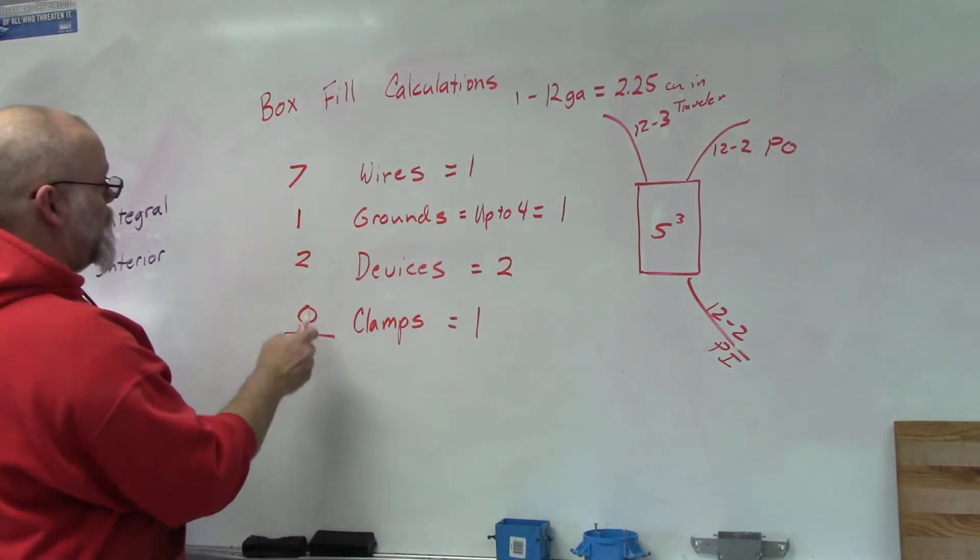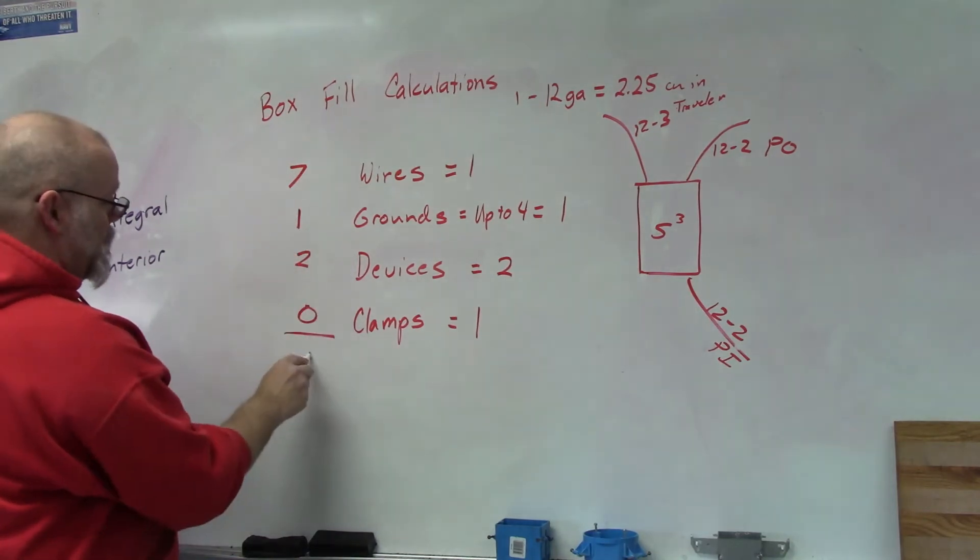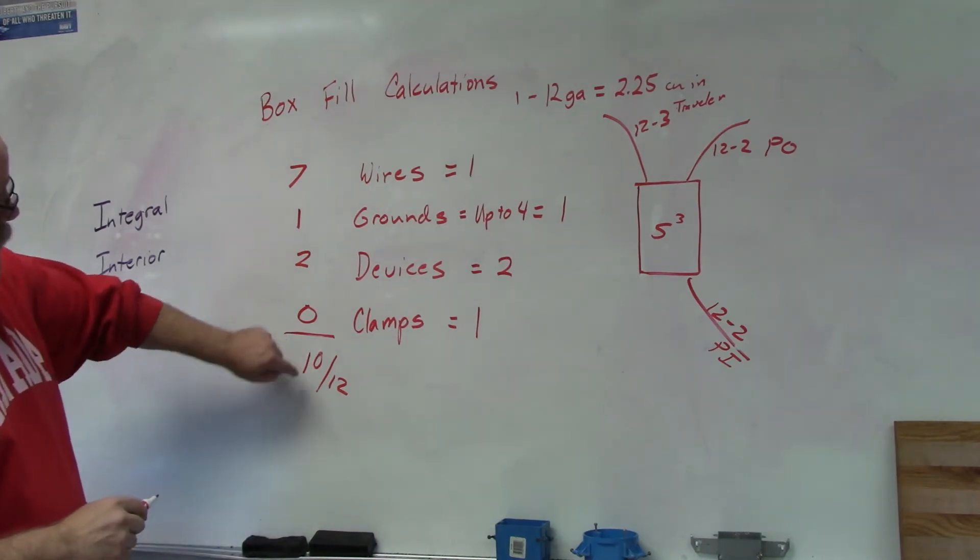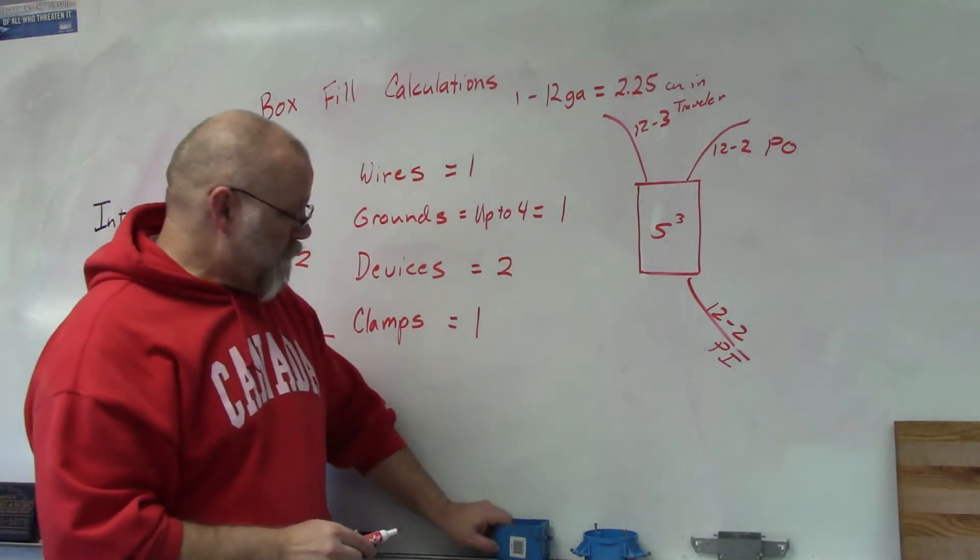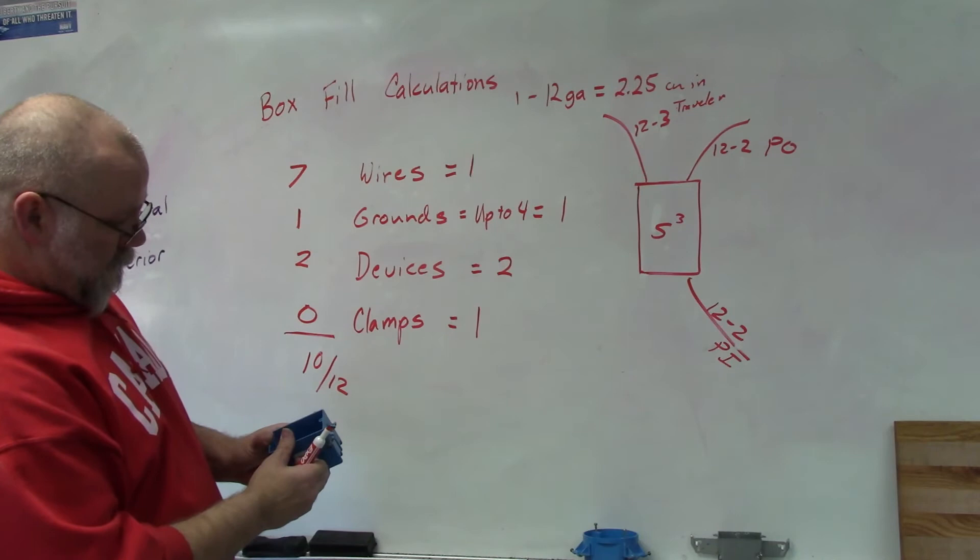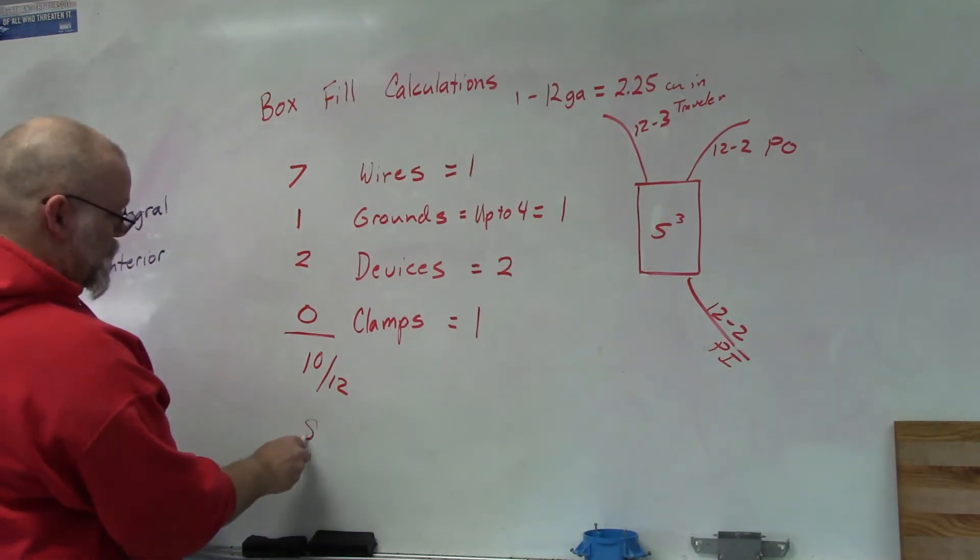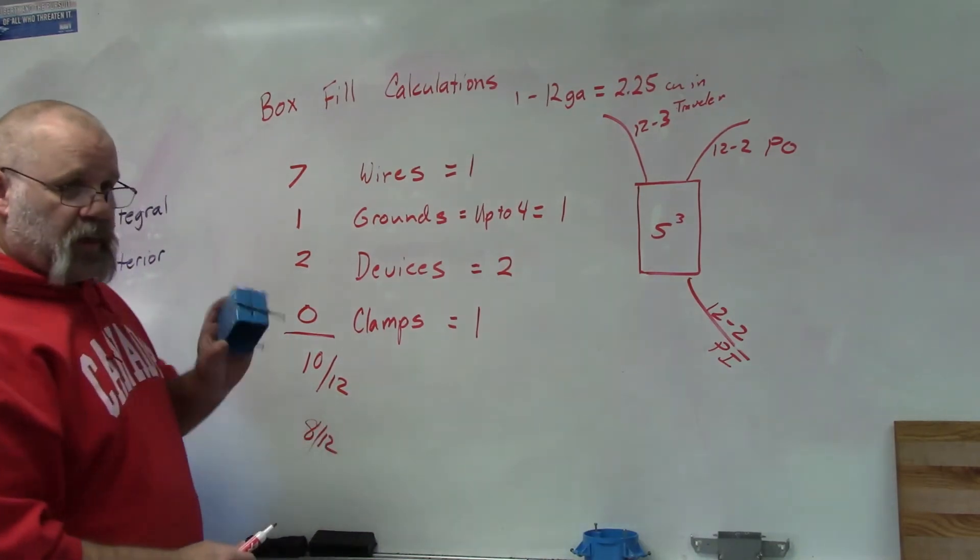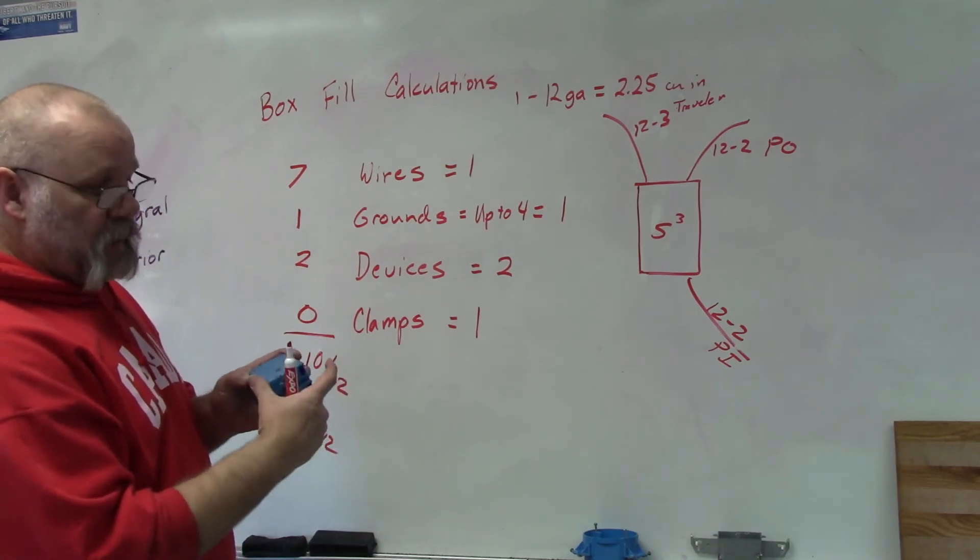So if I add this up, I got seven, eight, nine, ten twelves. So this box says that I can have eight twelves. So this box isn't big enough. It's not deep enough.